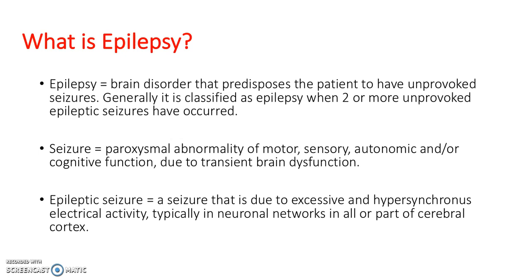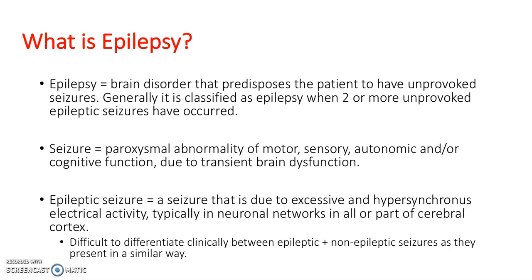An epileptic seizure is due to excessive and hypersynchronous electrical activity in neuronal networks in either all — generalised — or part — focal — of the cerebral cortex. However, it is difficult to differentiate an epileptic seizure from a non-epileptic seizure because they present quite similarly.